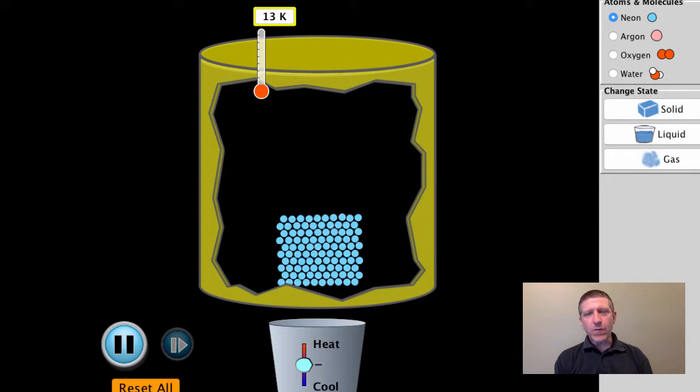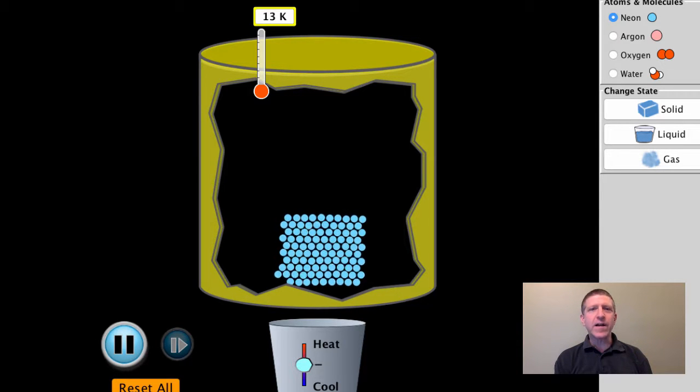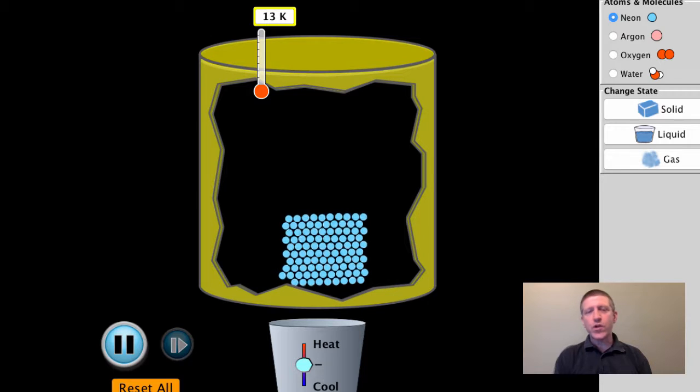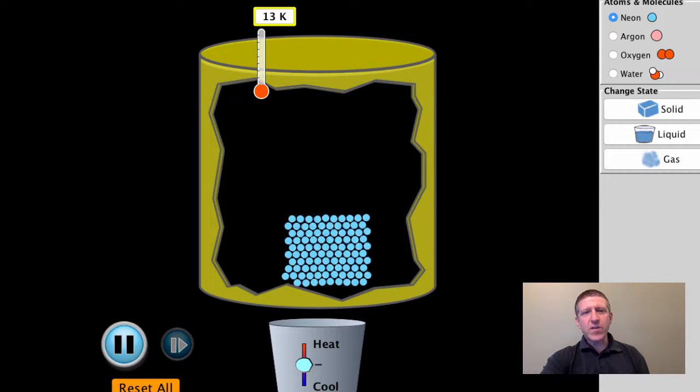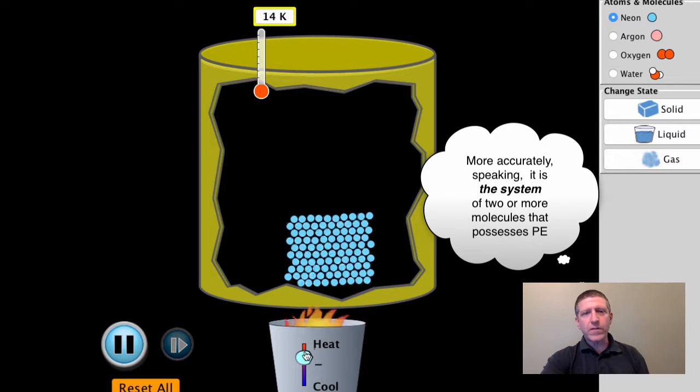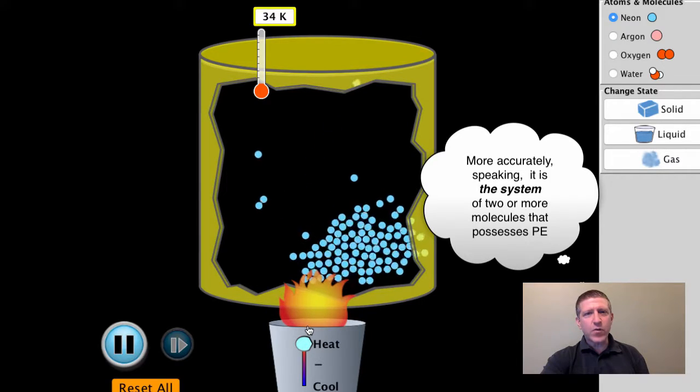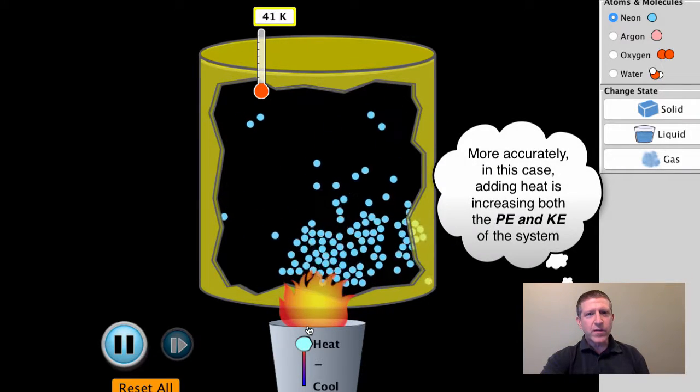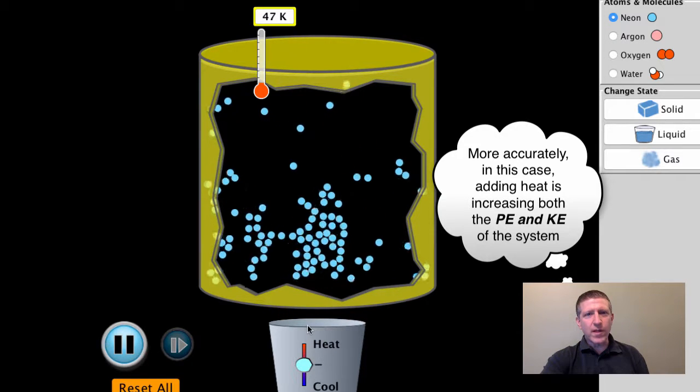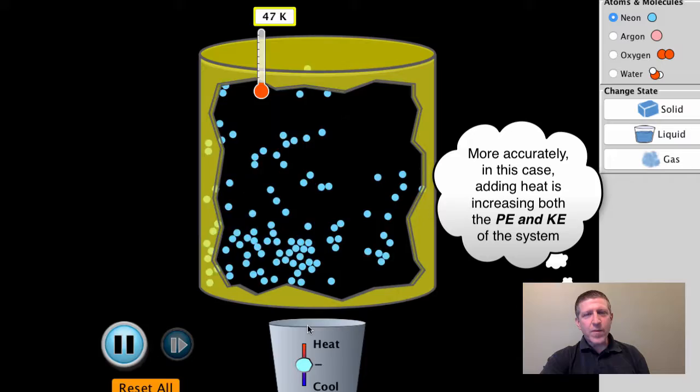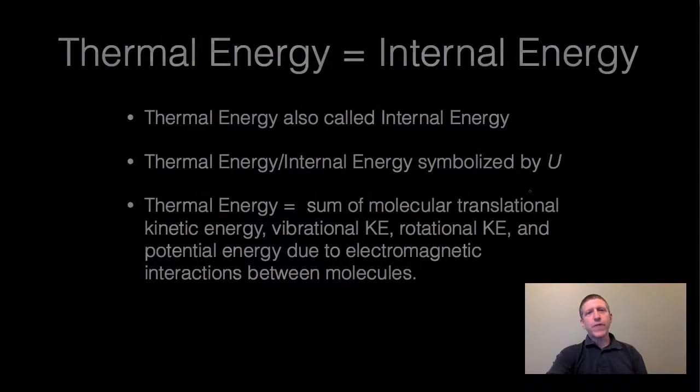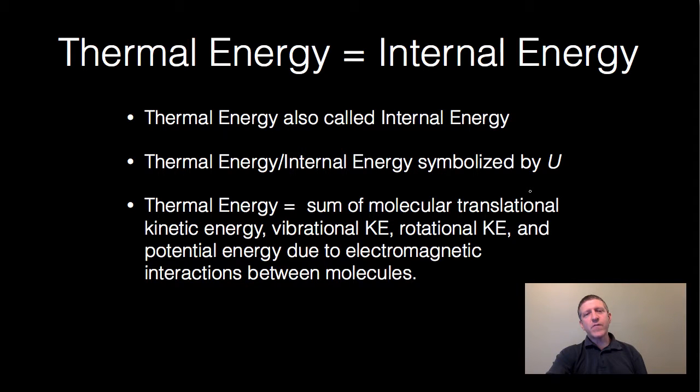These molecules right here are representing a solid that are very tightly packed and very attracted to each other. You can increase their potential energy by pulling them apart. And the way I'm going to do this is I'm going to just heat this up, increasing the distances apart and hence increasing the electromagnetic potential energy. You can see right there, I just turned this solid into a liquid, and the electromagnetic potential energy is much higher in that case. So again, thermal energy or internal energy, the sum of molecular translational kinetic energy, vibrational kinetic energy, rotational kinetic energy, and that potential energy due to electromagnetic interactions.